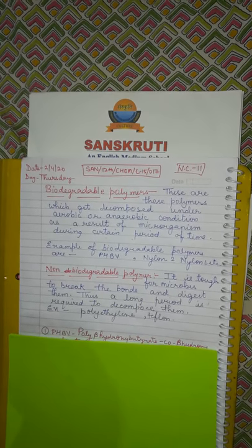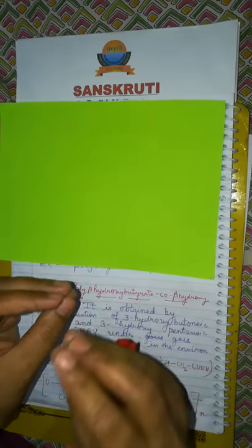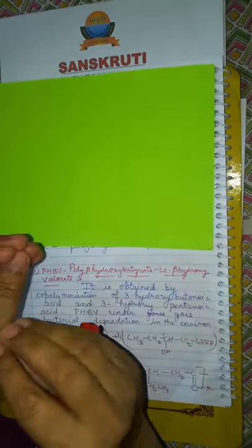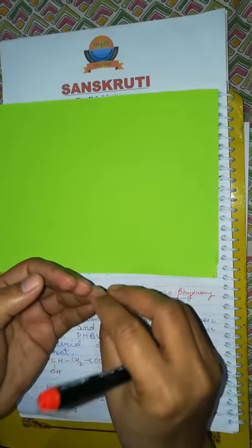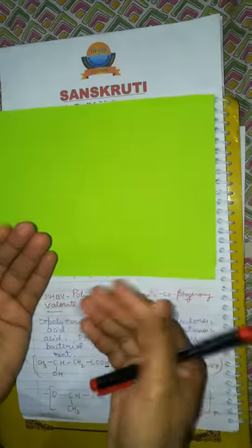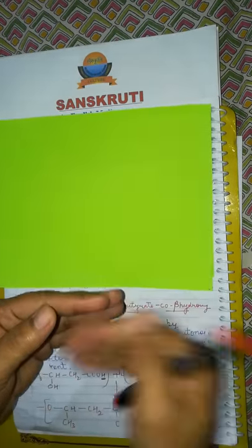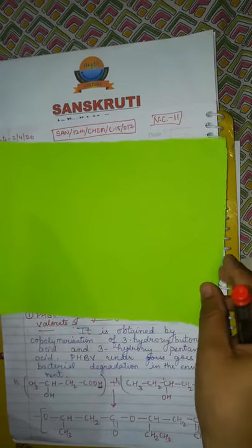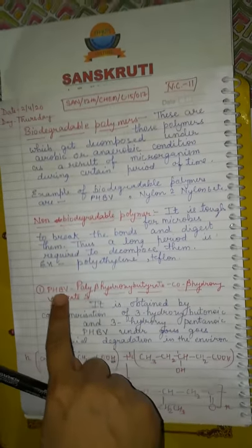Now, the most important point is PHBV. In this chapter, all the polymers are very important. All the manufacturing methods of polymers that I have taught you are important. Even in the exam, anyone can ask: what are the monomers of this polymer, how can we prepare it, is it a homopolymer or copolymer — all these things can be asked. So we are coming to one more important topic of the polymers chapter, that is PHBV.